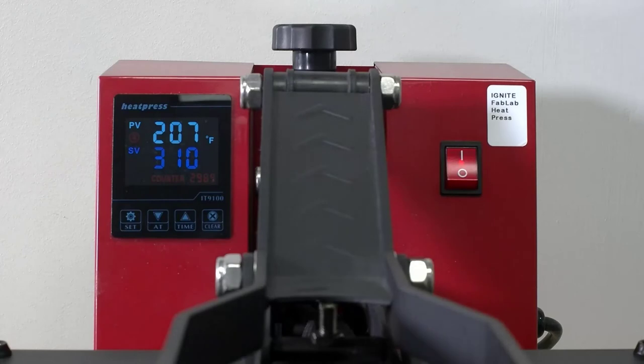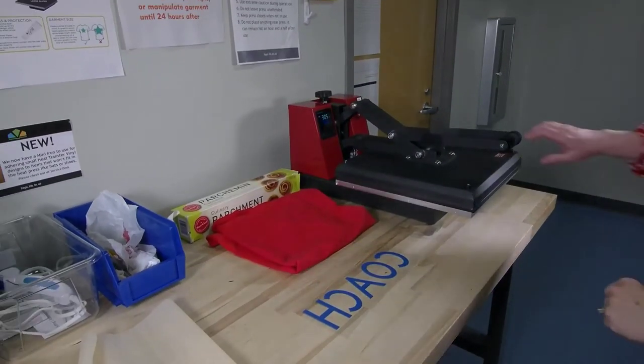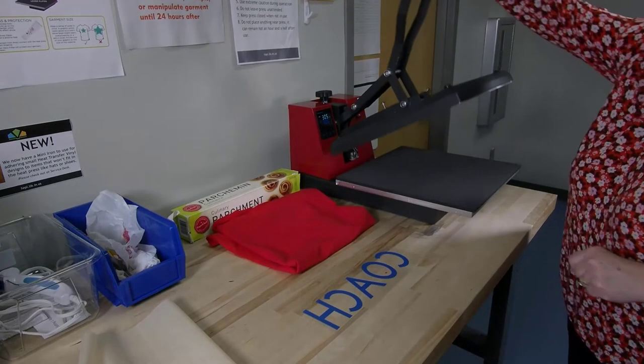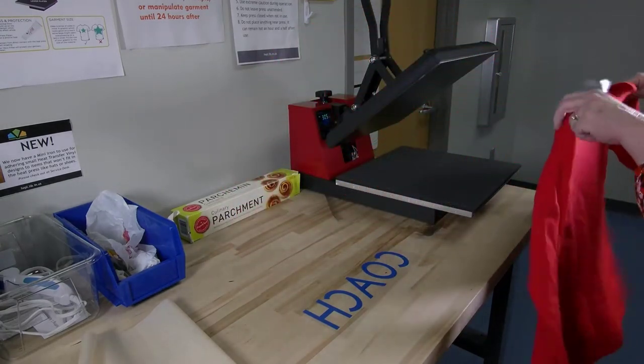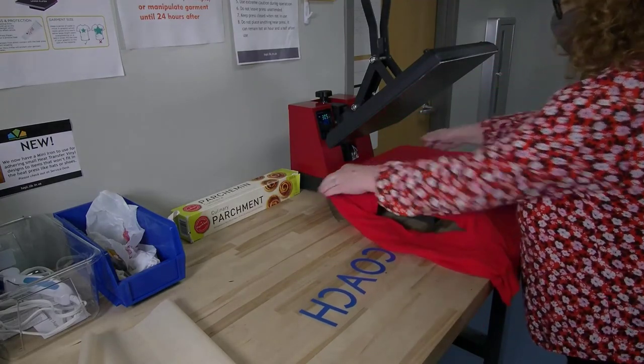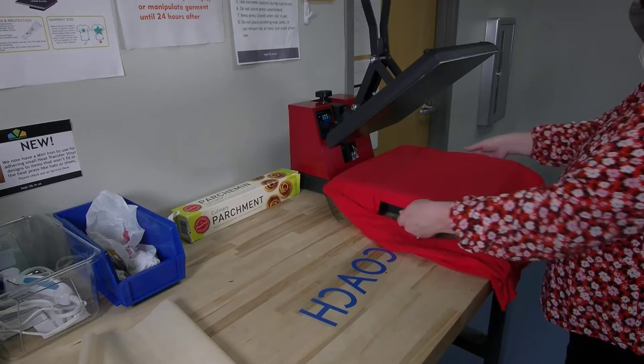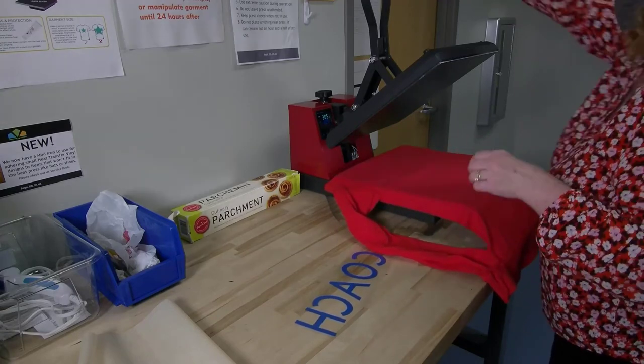Once the actual temperature, shown on top, reaches the desired temperature on the bottom, you are ready to press. First you need to press your shirt for about 5 seconds to warm up the fabric. Lift the arm of the press and very carefully place the shirt on the press. The upper and lower parts of the press are over 300 degrees, so please be careful not to touch them.